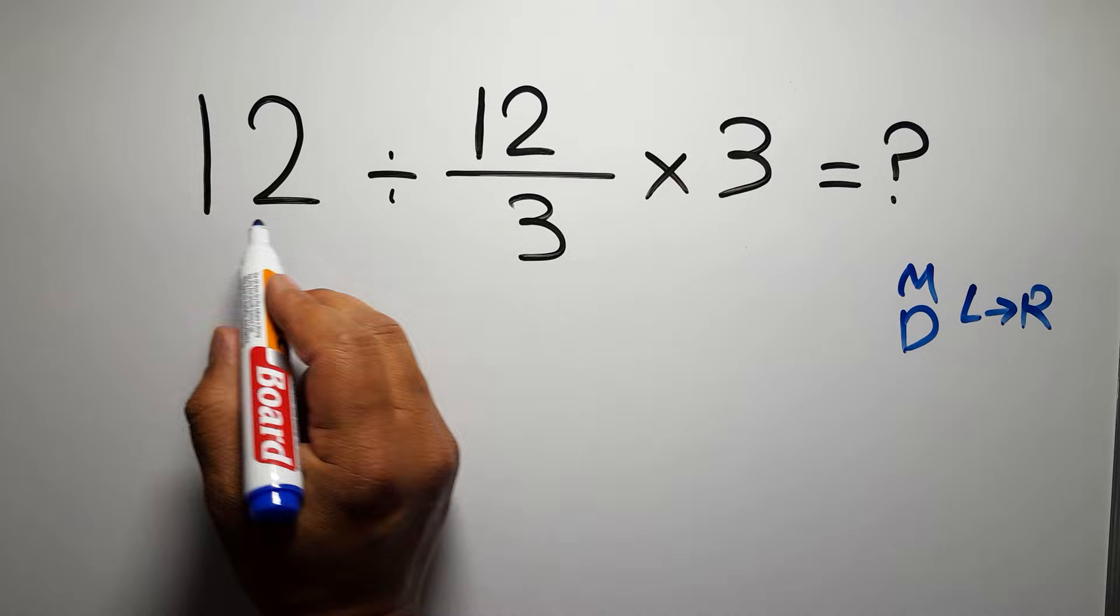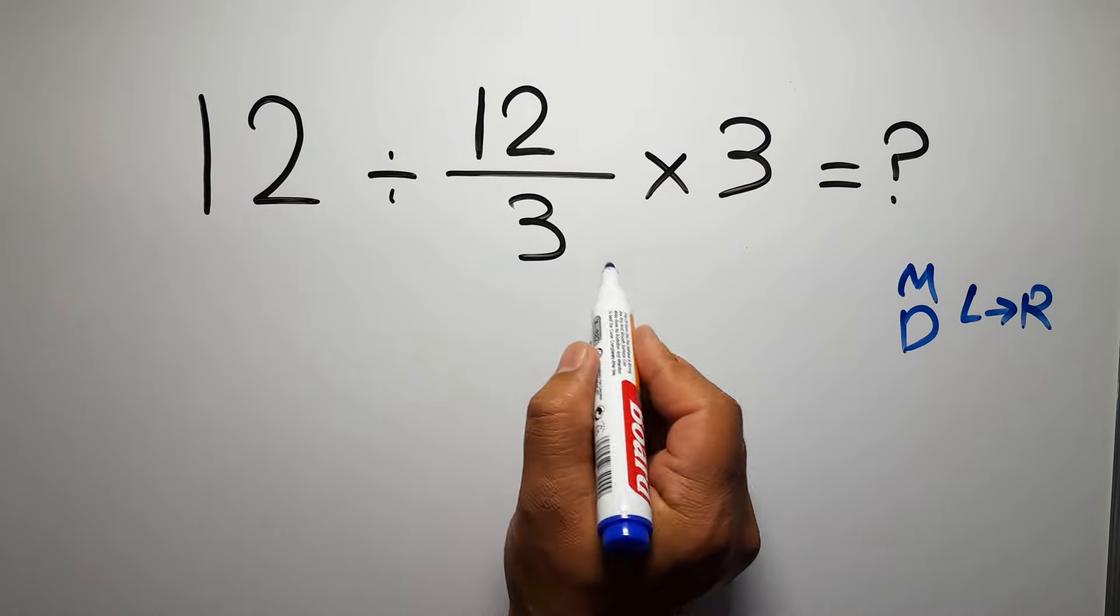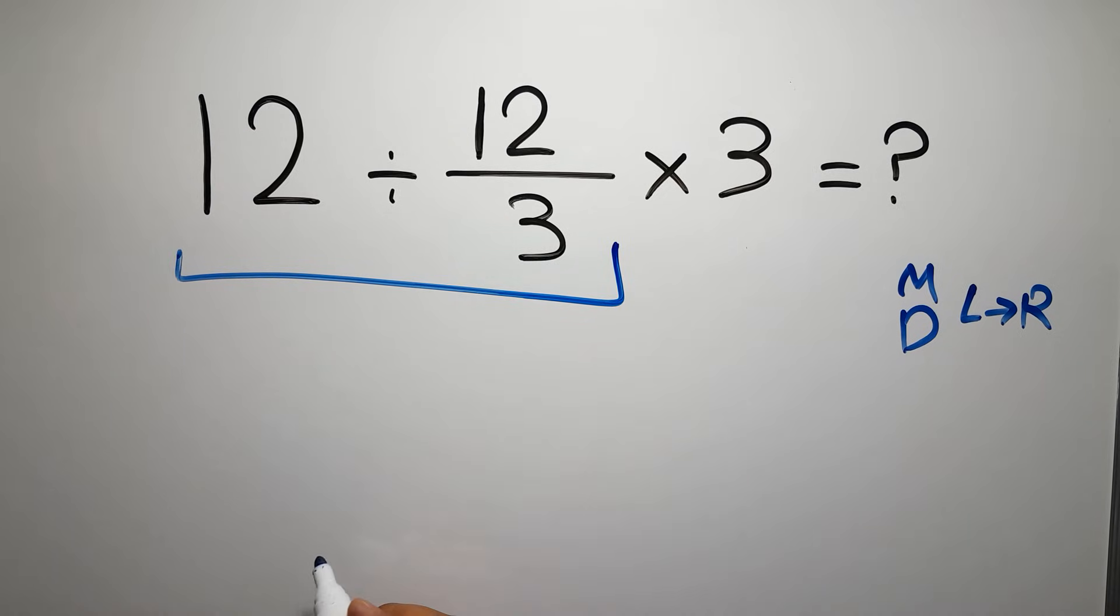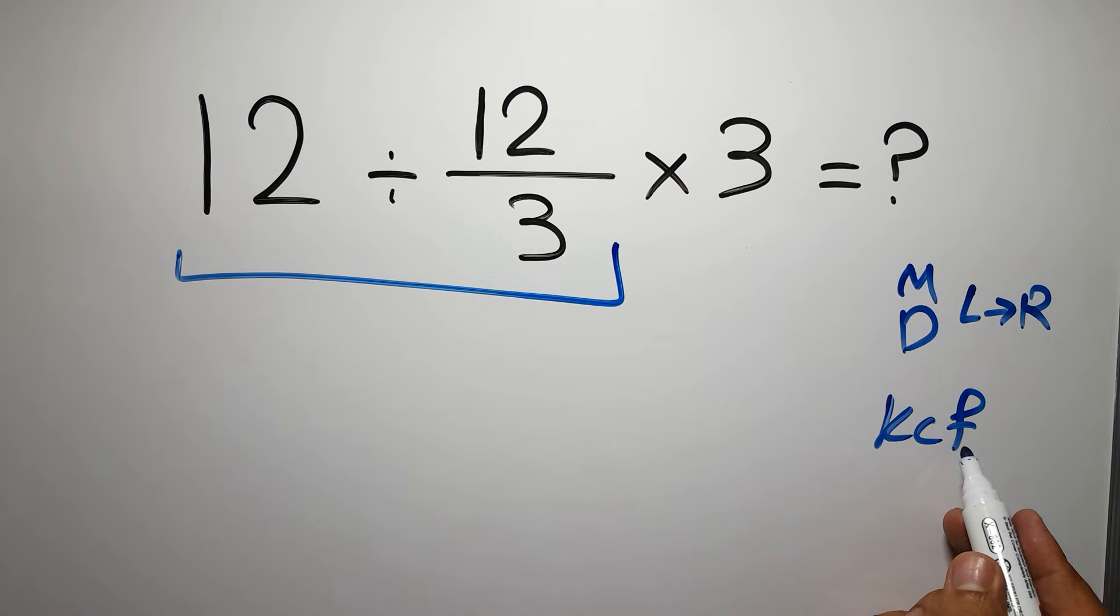So first this division: 12 divided by 12 over 3. According to the KCF rule, K stands for keep, C stands for change, and F stands for flip.